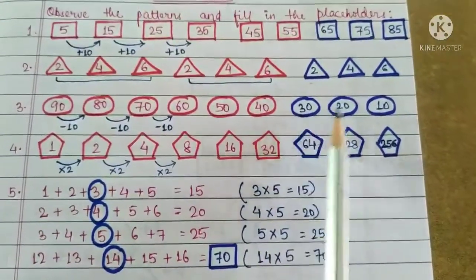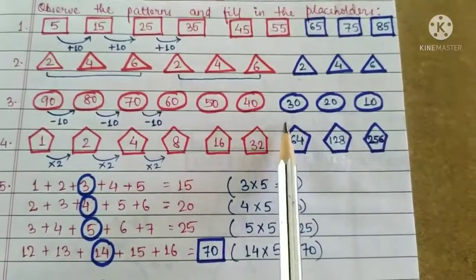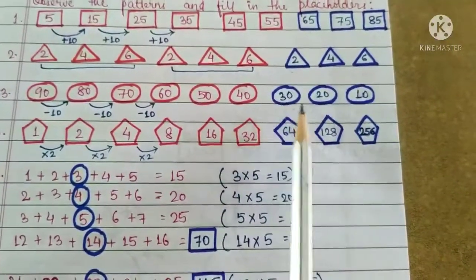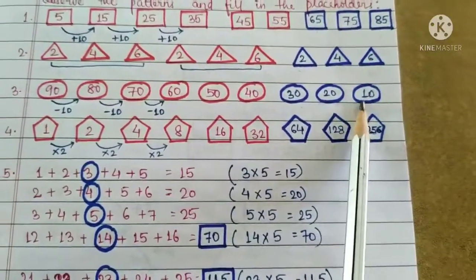So the next 3 numbers will be 40 minus 10 is 30. 30 minus 10 is 20. 20 minus 10 is 10.